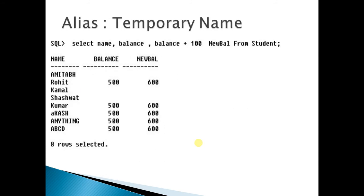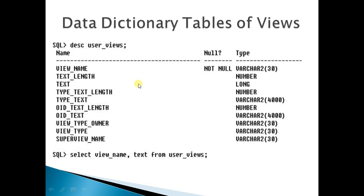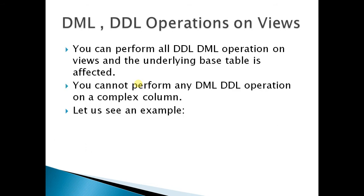If a view contains a normal column it is known as a simple view, but if it contains a function, expression, or formula then it becomes a complex view, or you can say it has a complex column. In this example there are two simple columns and one complex column. The new_bell is an alias of balance plus hundred, while balance and name are the regular columns of the table. You can perform all operations on views, but the changes are reflected in the base table. However, you cannot perform any DDL or DML operation on a complex column.